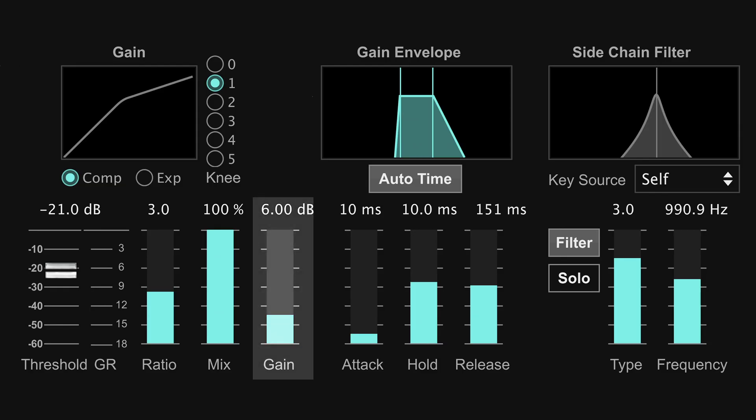The gain setting on a compressor allows you to restore the signal back to its original level before compression. So if you're compressing the signal by 6 dB, you can apply 6 dB of gain to bring the signal back to where it was. In essence, this brings the uncompressed signals up by 6 dB while leaving the compressed signals where they were to begin with.